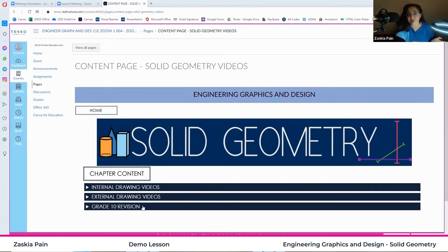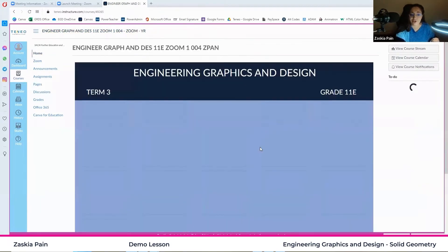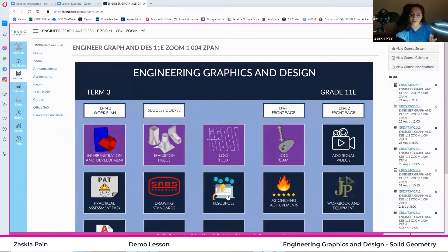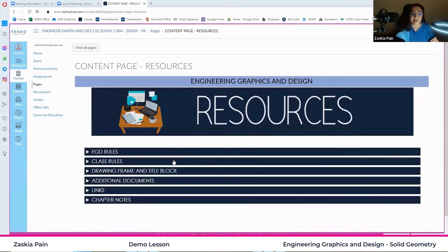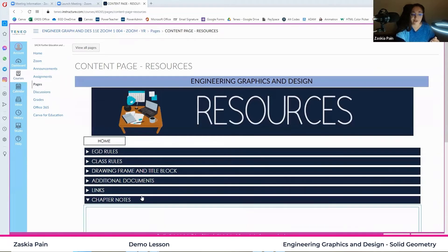So if you just want to revise the previous year's work, you can do so in this way. You can also go back to your home page. And if you want to do a quick checklist of your course drawing that you are going to submit, you can open resources and then go to chapter notes.